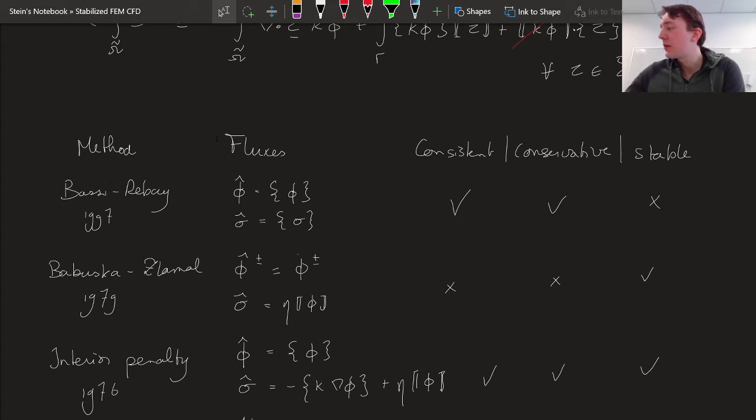Now again, this is a table that I largely took from that book that I pointed out earlier. It's actually by now quite a famous table, because diffusion shows up everywhere, so we always have to take into account this diffusive flux in some way, and we have a whole bunch of options to pick from.